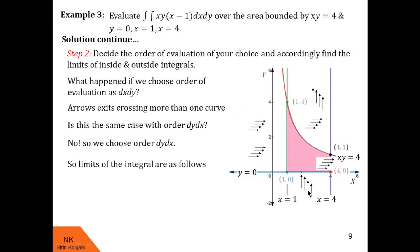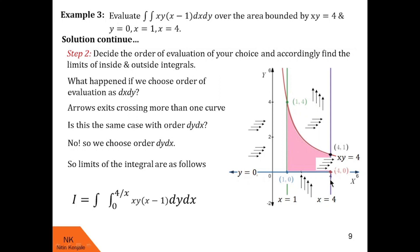Now we find the limits for order dy dx. Arrows parallel to the y-axis cross y = 0 to enter the region, so y = 0 is the lower limit of the inside integral. They cross xy = 4, that is y = 4/x, while leaving, so 4/x is the upper limit of the inside integral. For the outside integral, throwing arrows parallel to the x-axis, they first touch the boundary line x = 1, which is the lower limit, and last touch x = 4, which is the upper limit of the outside integral.